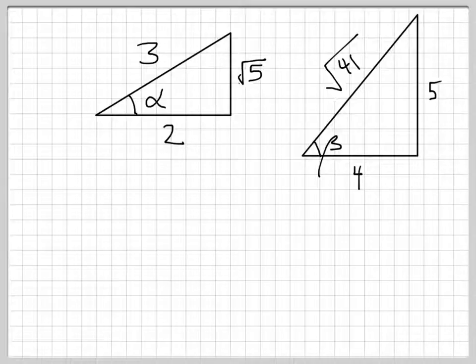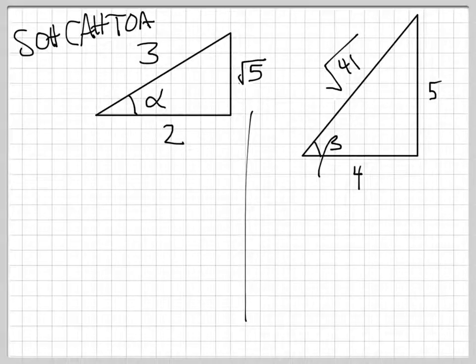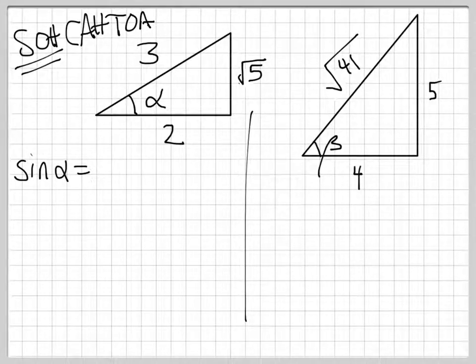And what we can do with that information is we can start calculating trig values. You have to remember SOHCAHTOA, but if I want sine of alpha, SOHCAHTOA tells me that sine is the opposite over hypotenuse, and the opposite is take where the angle is and draw a line pointing out from it, that side is opposite to that angle. And so sine of alpha is radical 5 divided by the hypotenuse, which is 3.